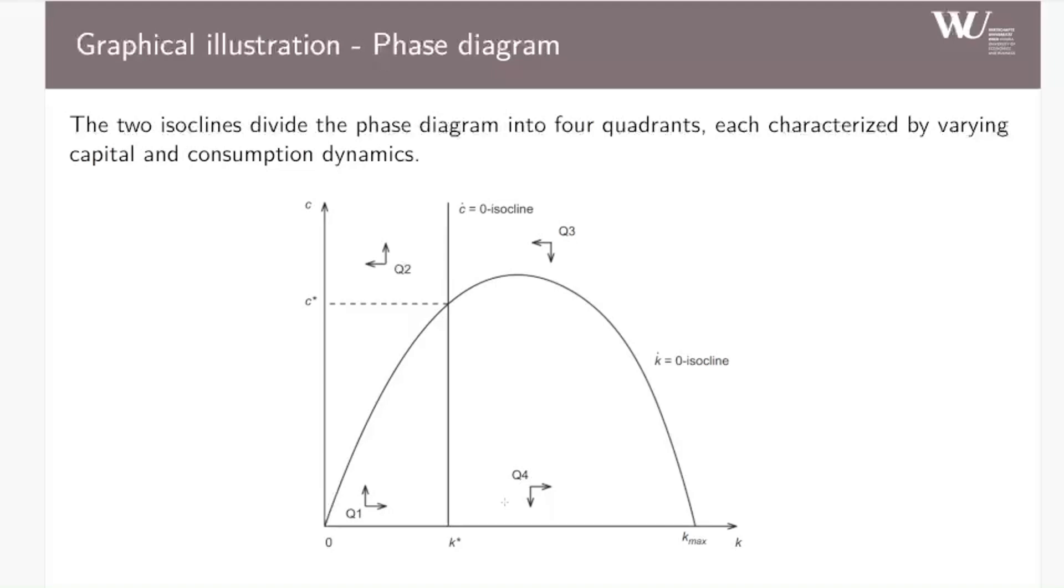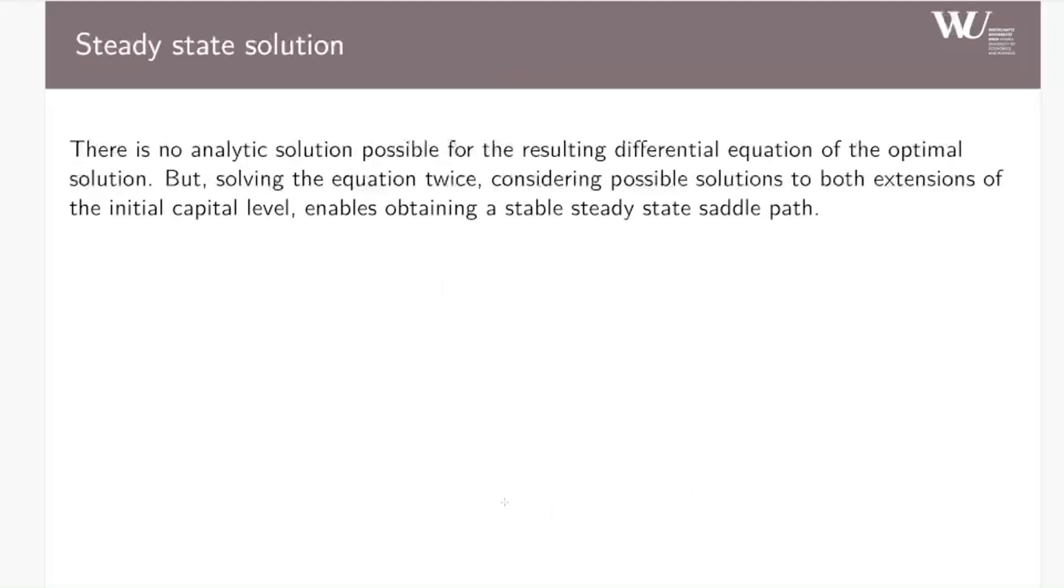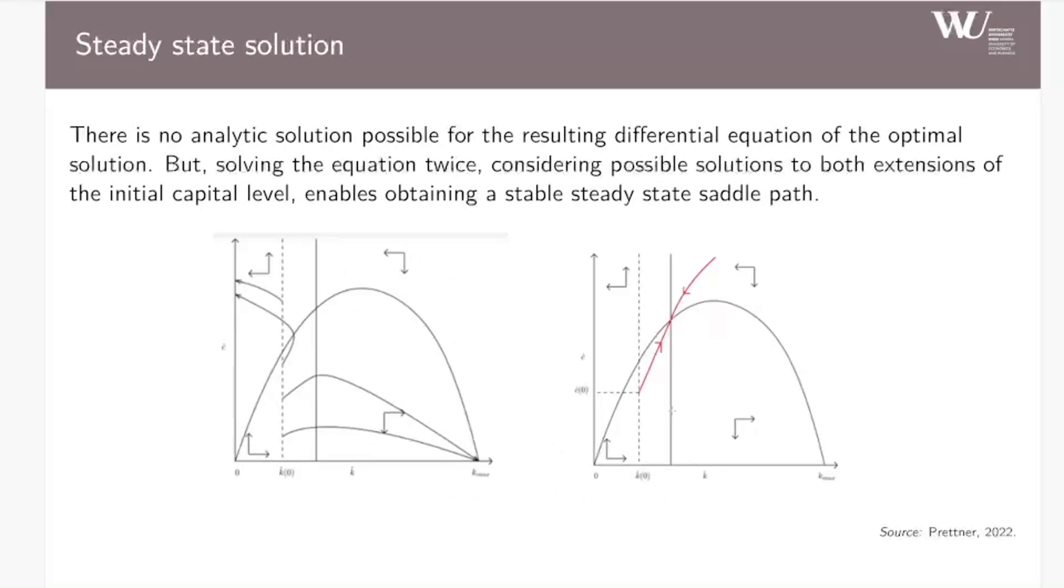We are now most interested in this initial steady state. To solve for it, there is no analytic solution possible, but you can solve it numerically by solving the equation more or less twice, considering possible solutions to both extensions of the initial capital level. Then you can come up with this stable steady state saddle path. Just a glimpse: the most effective method here is to solve by this time elimination method, which is here hinted at but I won't discuss it in detail. There are several papers on it and it's quite complicated and complex. In the end, you then come up with this saddle path. Here in red you can see that the economy always converges to this steady state from both sides, either below the optimal level or above.